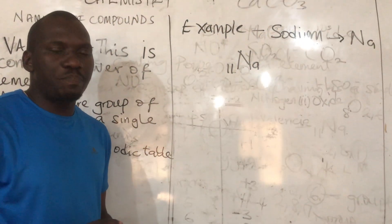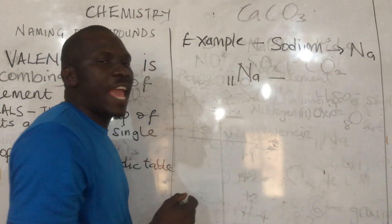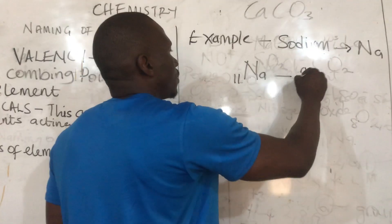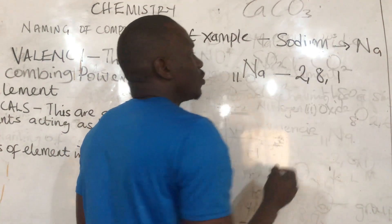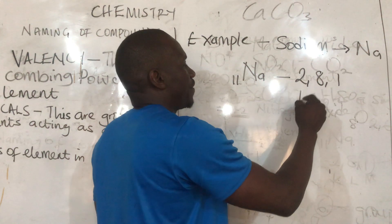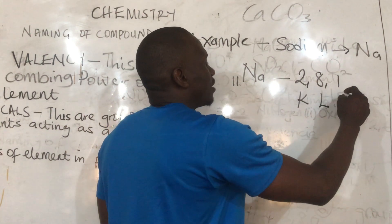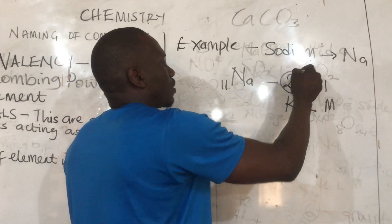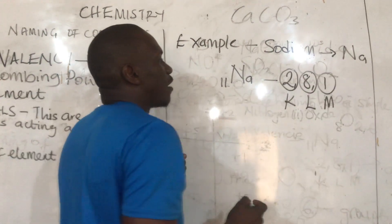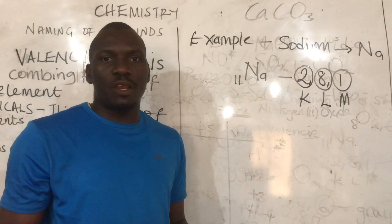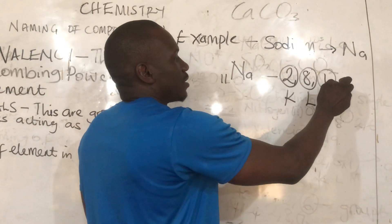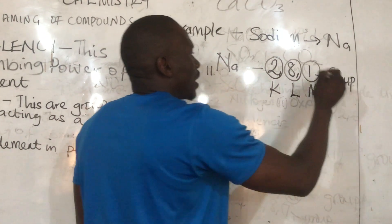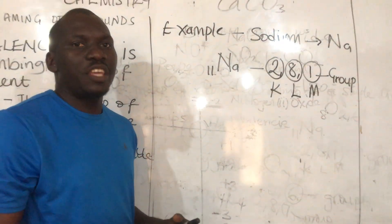Let's get the electronic configuration of sodium in shell configuration: 2, 8, 1. Which means sodium has successfully filled shells K and L, with shell M remaining. In identifying the group an element belongs to, the last number you write in the shell configuration is the group. So the last number the element has is its group.